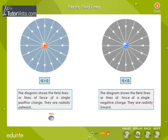Let us see the nature of lines of force around some simple charge configuration. In the case of a single positive charge, the lines of force are radially outward.